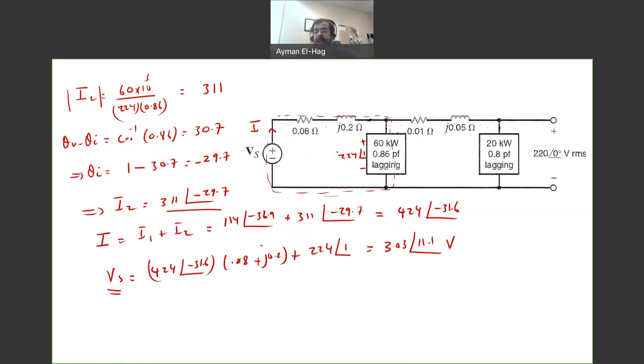So here, introducing this impedance between these two loads changed the way or the approach of the problem. Still, you need to find I as usual. However, now you cannot assume that the two loads will have the same voltage. This will have a different voltage that you need first to find, and then you move on from there.